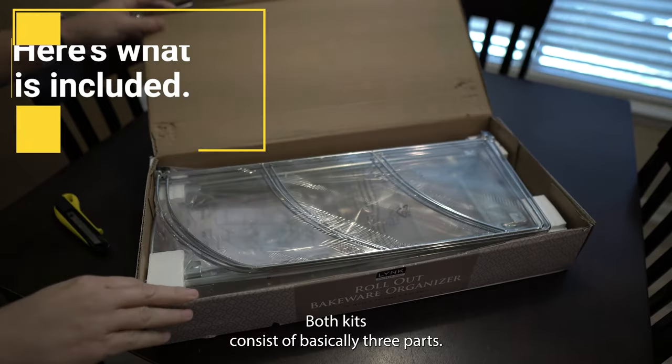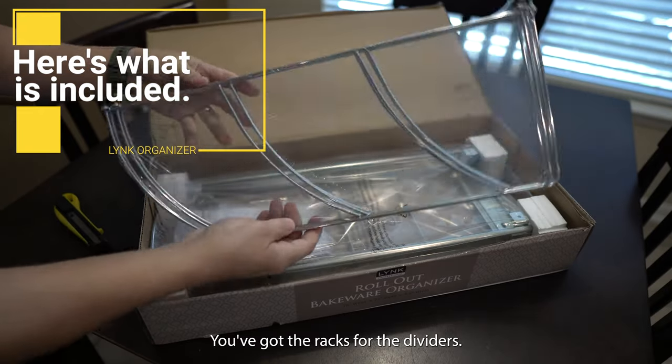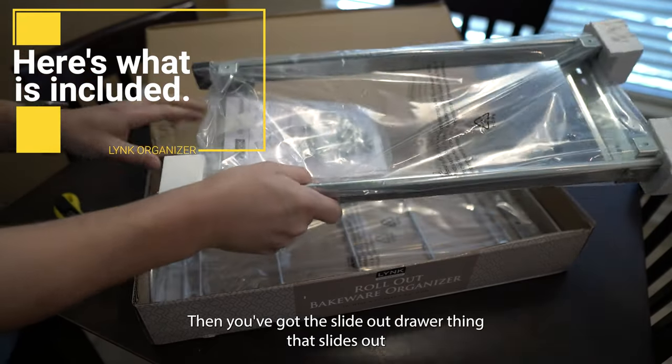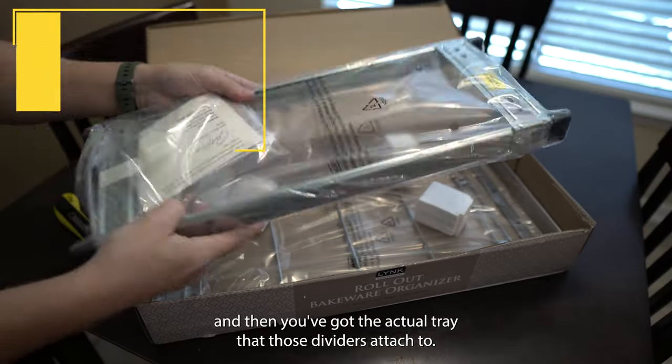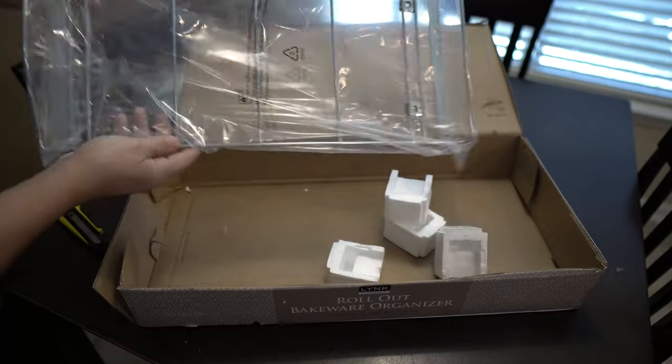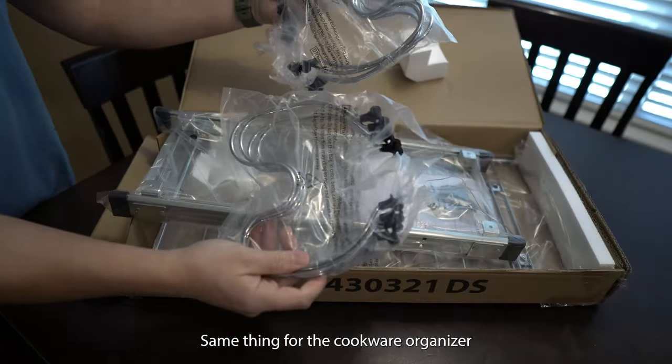Both kits consist of basically three parts. You've got the racks or the dividers, then you've got the slide-out drawer thing that slides out, and then you've got the actual tray that those dividers attach to. Same thing for the cookware organizer.